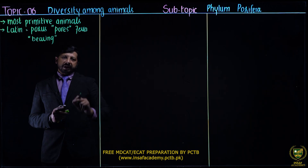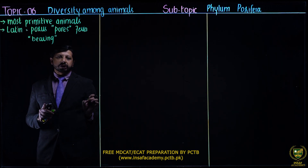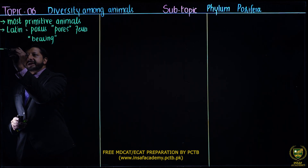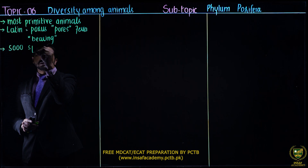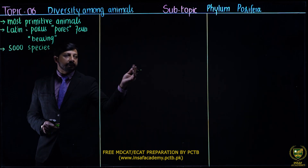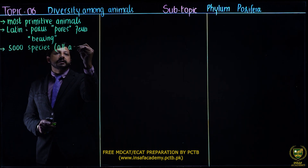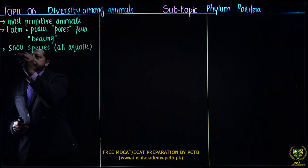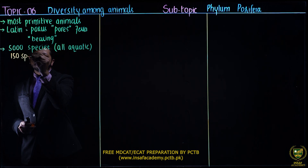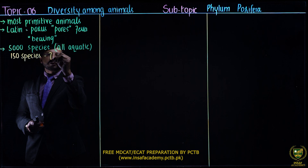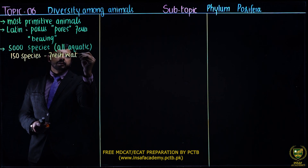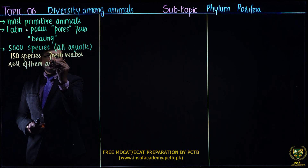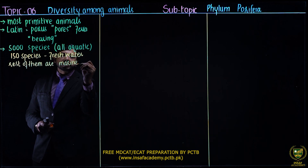In the first year, we have discussed this along with diagrams in detail. Overall, there are five thousand species of this phylum and all are aquatic. There is some distribution: 150 species live in fresh water, while the rest are marine — meaning sea water or ocean water.